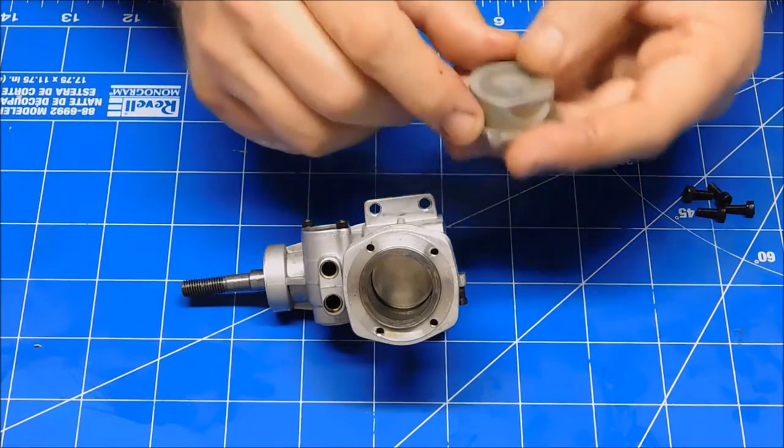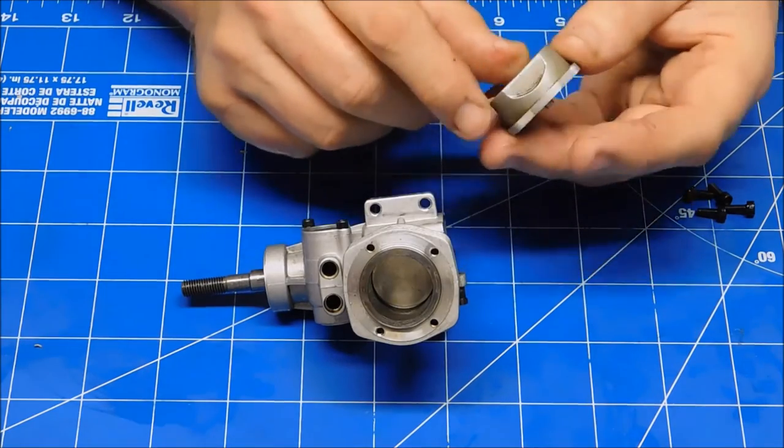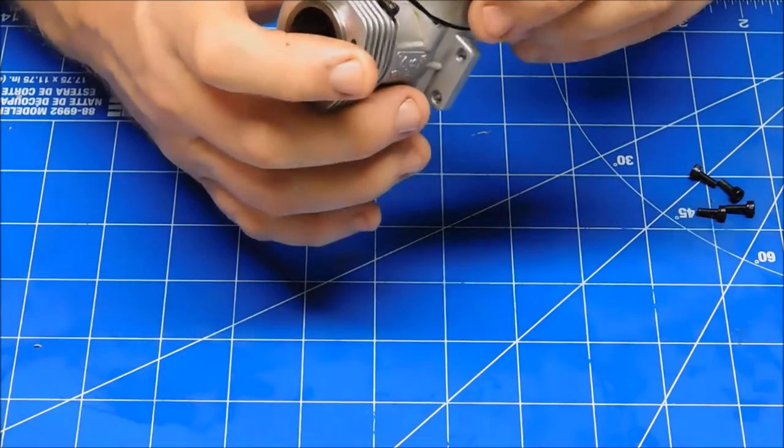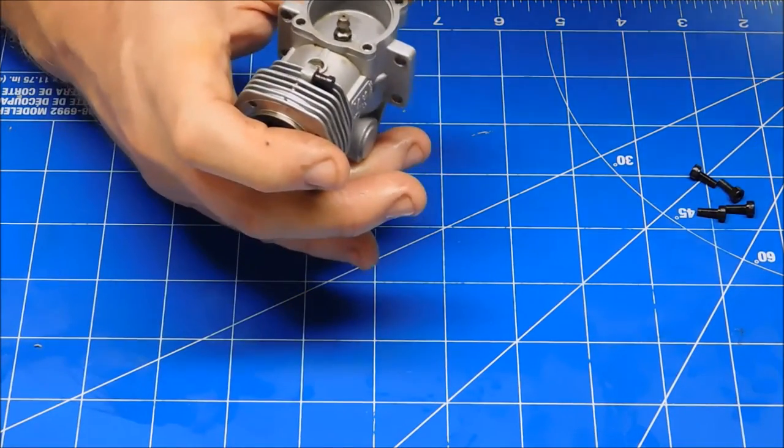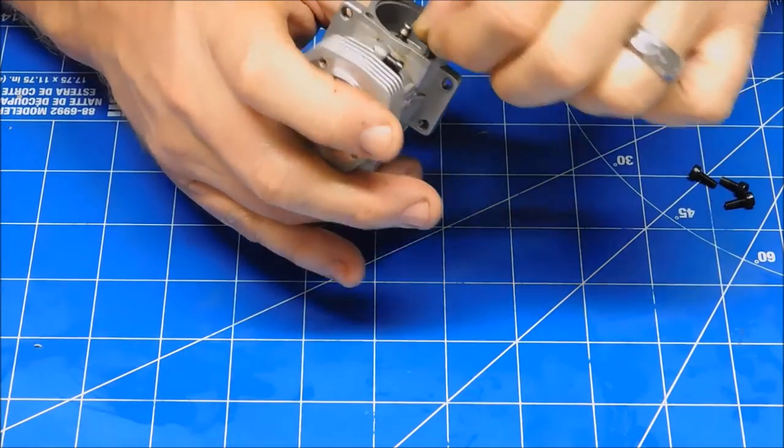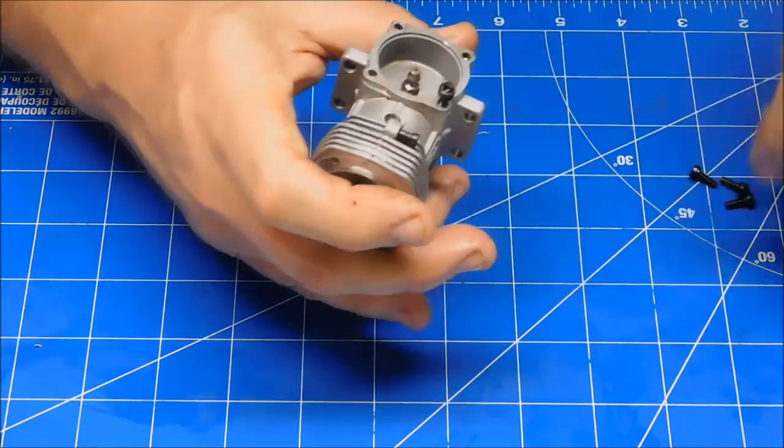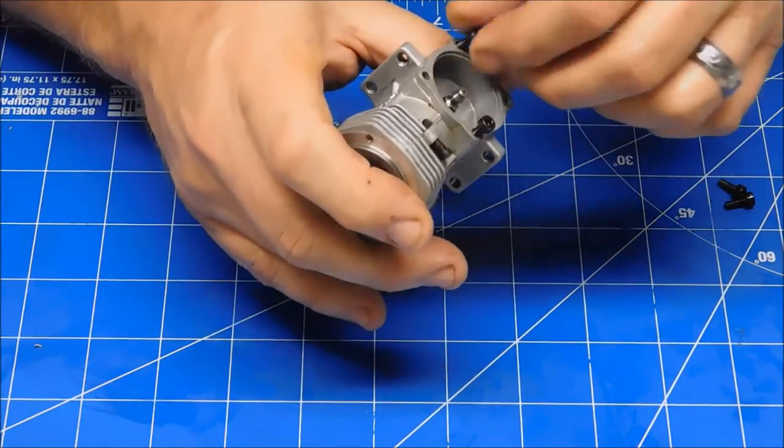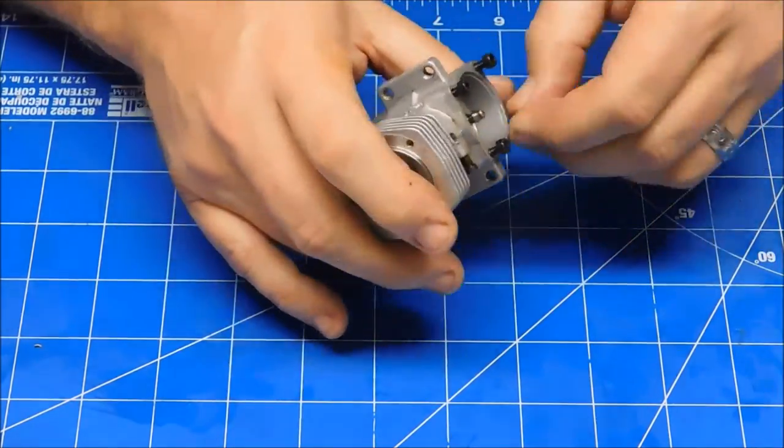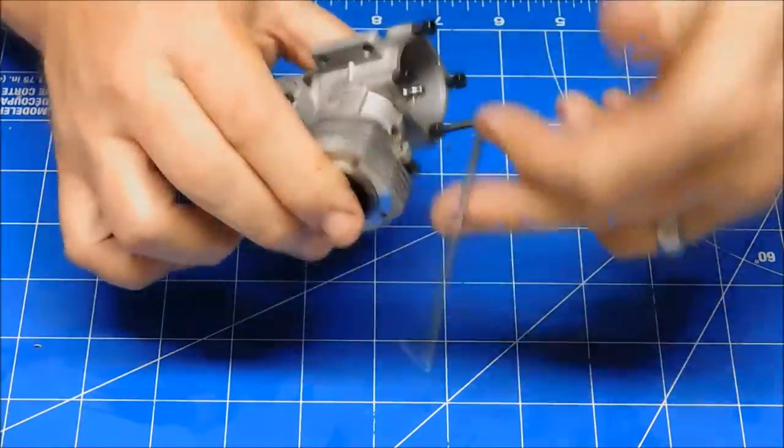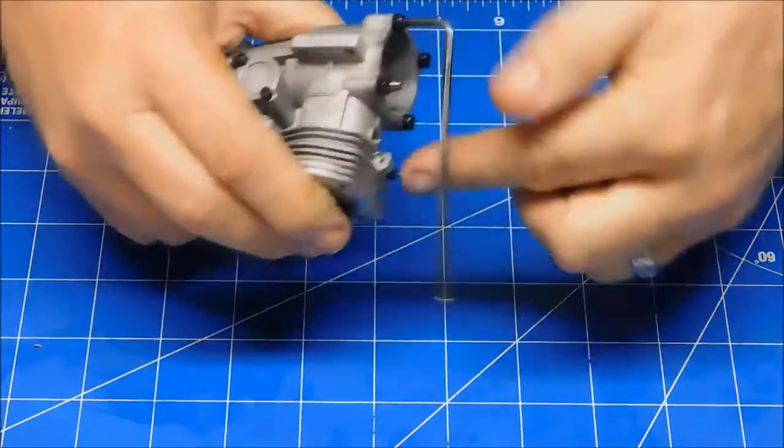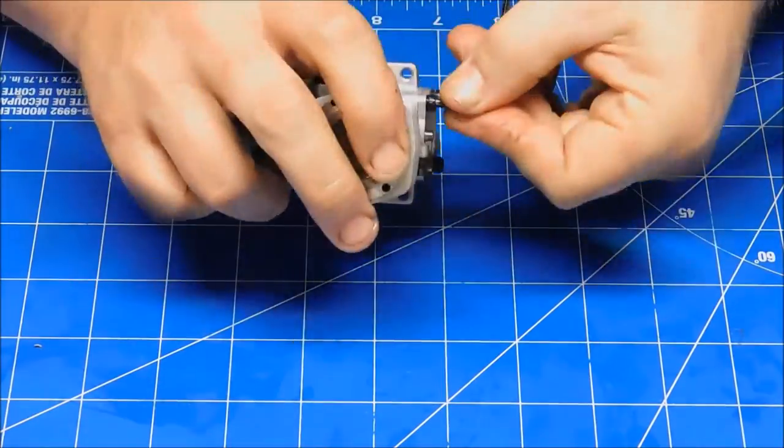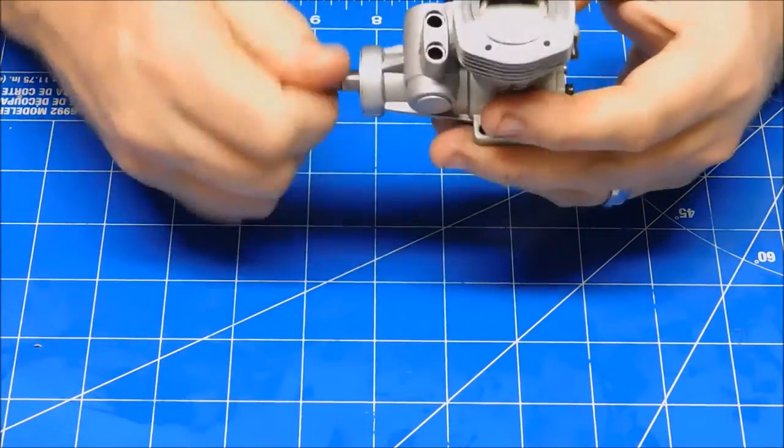I guess the next thing is put the back blade on. I don't have a replacement gasket for this. I'm really not all that concerned about it. If it leaks, I can seal it up, or just buy a new gasket set, but right now I just want to get it back together and see how the engine is going to run. Back blade's installed.